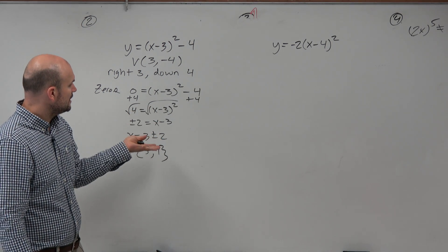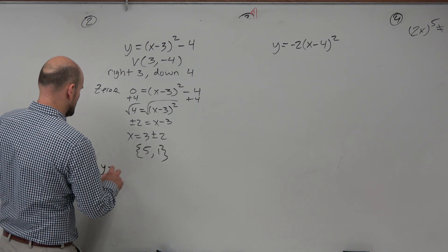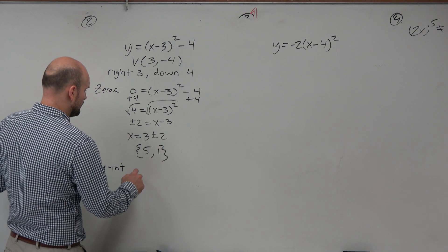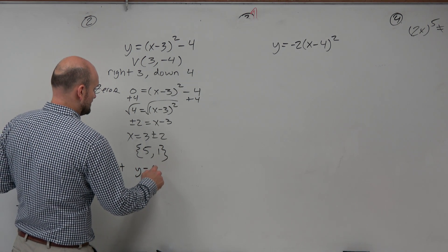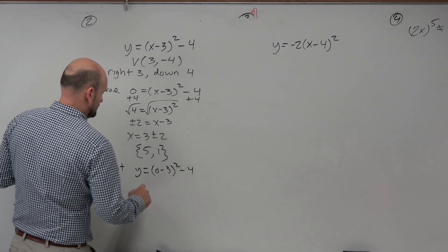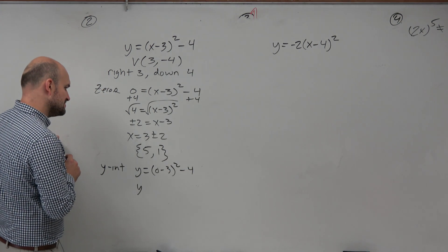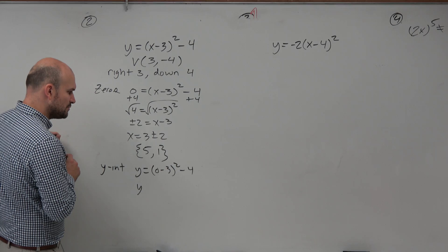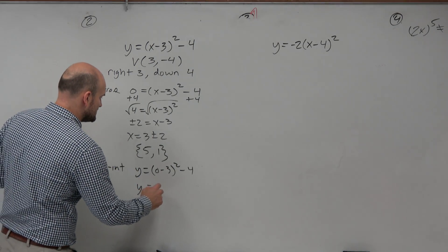Now the y-intercept. The y-intercept is when x is equal to 0. So do the math here. So 0 minus 3 is negative 3. Negative 3 squared is 9. 9 minus 4 is 5.